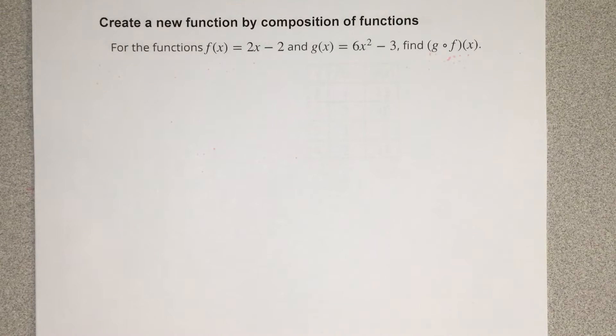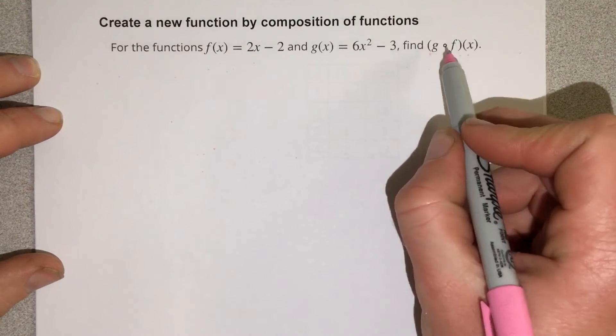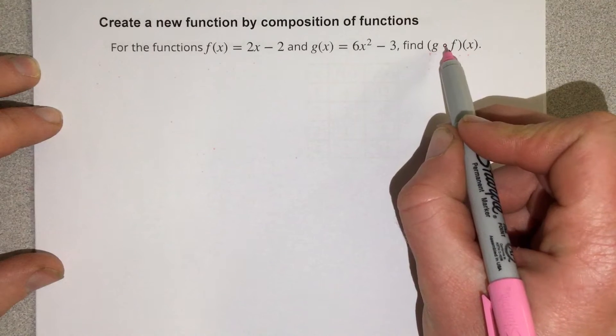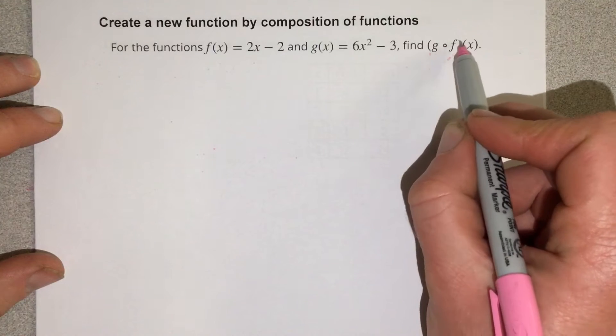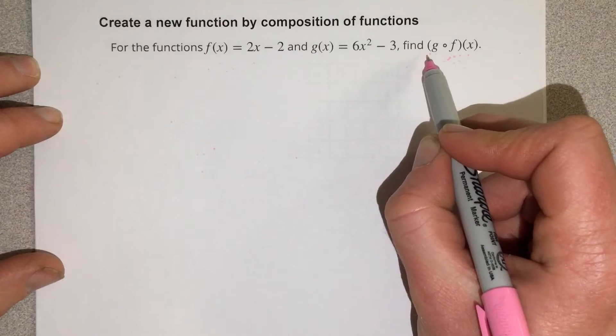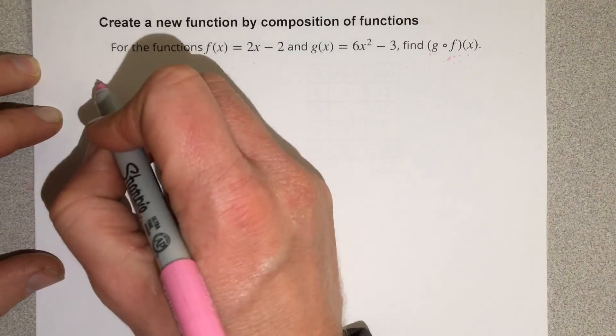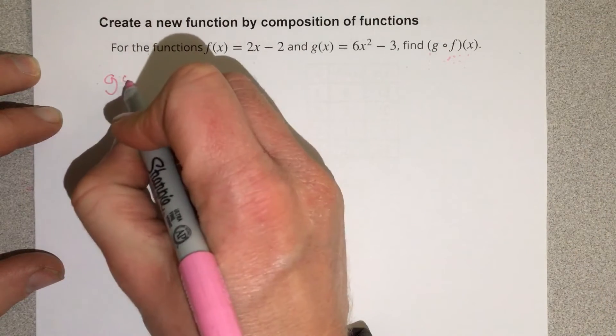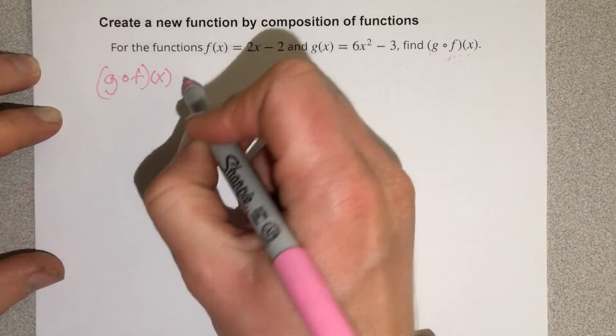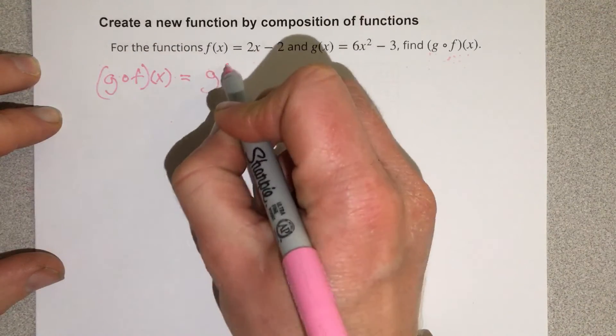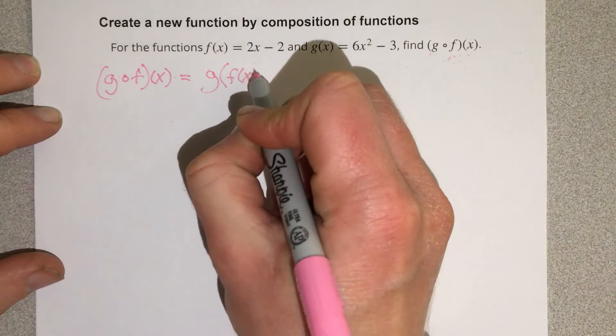What I like to do is start by writing this g of f of x in a simpler version. This circle here is not a multiplication, it means of, and what it's saying is take the f function and plug it into the g function. So we're going to write this as g of f of x is equal to g with an input of f of x.